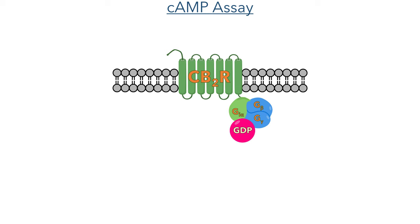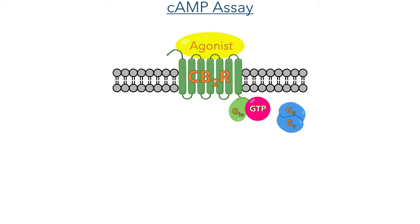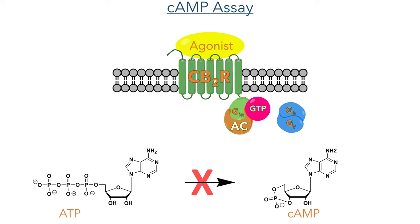The CB2 receptor is embedded in the cell membrane and is coupled to the G alpha subunit of the G protein, which is also bound to the G beta and gamma subunits together with guanosine diphosphate. In this form, the AC enzyme is able to carry out its function to convert ATP to cyclic AMP. However, when an agonist binds to and activates the CB2 receptor, dissociation of the G beta and gamma subunits is triggered along with the conversion of guanosine diphosphate to guanosine triphosphate. The newly liberated G alpha subunit then binds to the AC enzyme, inhibiting its activity and preventing the conversion of ATP to cyclic AMP. Therefore, we would expect this assay to show reduced levels of cyclic AMP in the presence of an agonist.